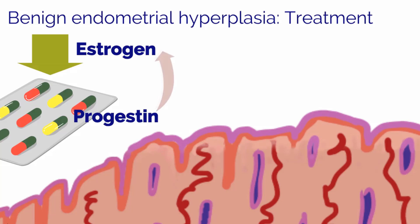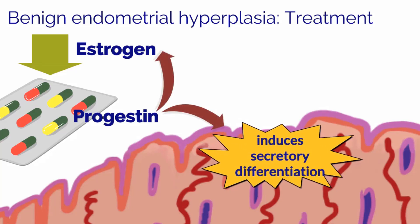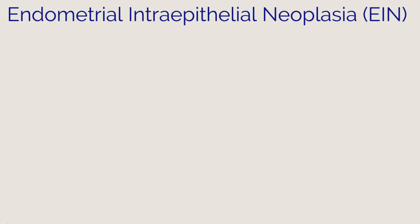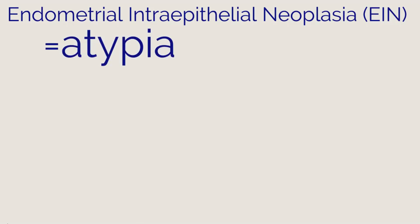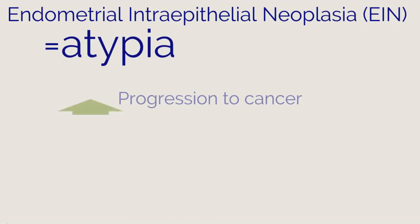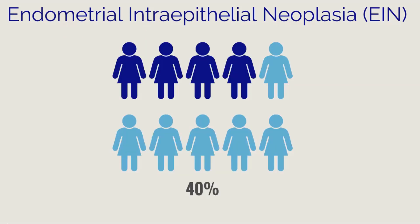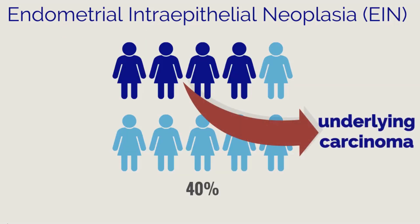Progestins counterbalance the proliferative effects of estrogens and induce secretory differentiation of the endometrium. The diagnosis of endometrial intraepithelial neoplasia (EIN) is a separate entity, consistent with atypia in the 1994 WHO schema. This is considered a pre-malignant lesion with a 27% risk of progression to endometrioid endometrial cancer. In fact, about 40% of patients with EIN may already have underlying carcinoma, since endometrial biopsy only samples a portion of the endometrium.